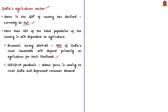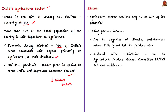Due to the pandemic, the labor force is moving to rural India and there is depressed consumer demand. Experts predict that incomes could further drop by about 10 to 20%. The main problem is that the agriculture sector realizes only about 50 to 60% of its potential.